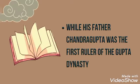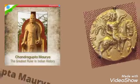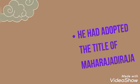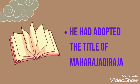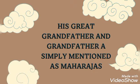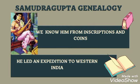Here is a picture of Queen Kumaradevi. His father Chandra Gupta was the first ruler of the Gupta dynasty, and he had adopted the title Maharajadhiraja. His great grandfather and grandfather were simply mentioned as Maharajas. We know Samudra Gupta's genealogy from inscriptions and coins.